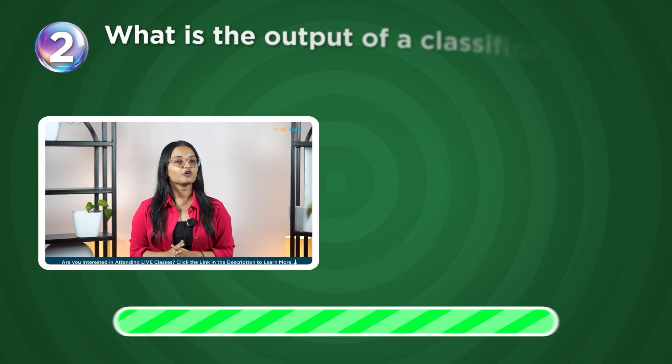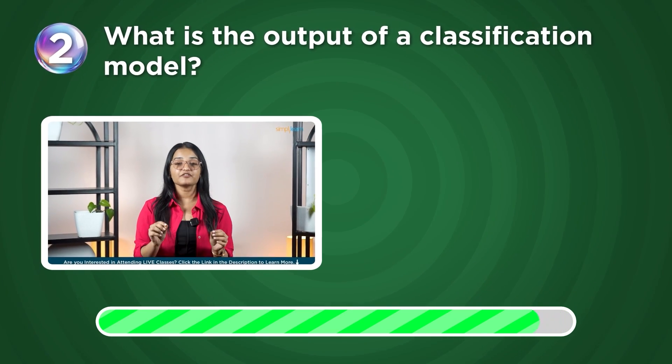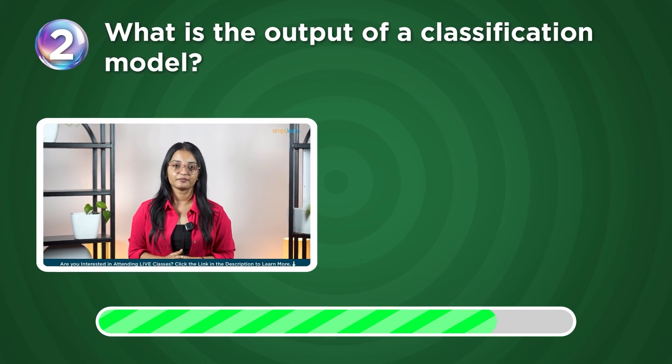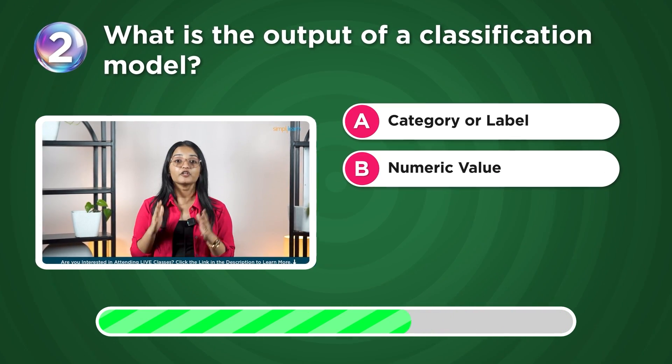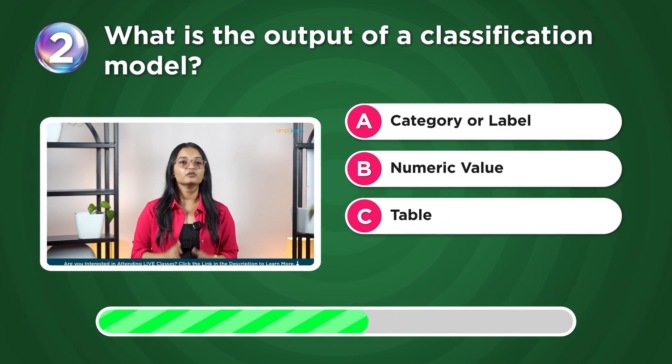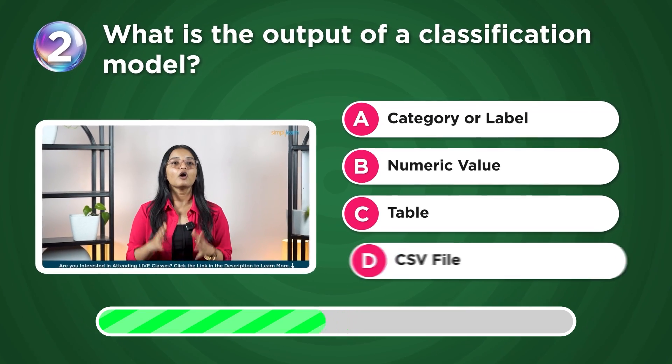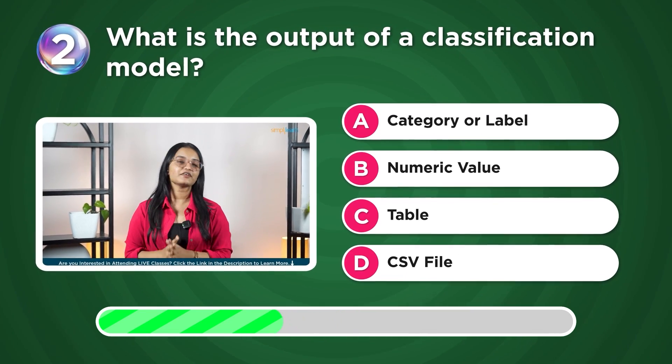What is the output of a classification model? Category or label, numeric value, table, or CSV file?